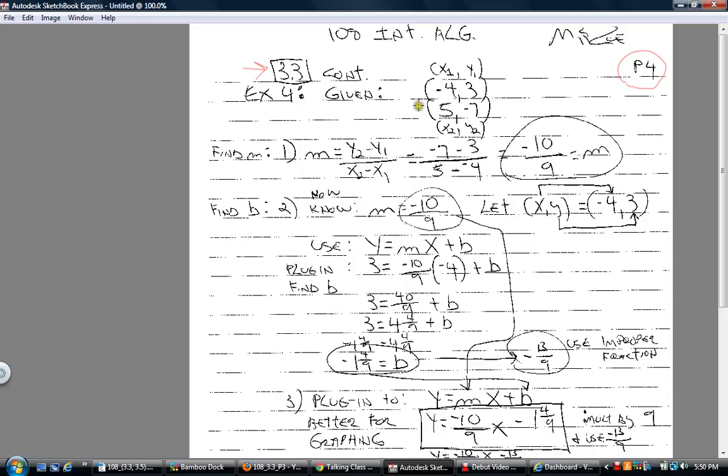Given two ordered pairs of points, what can we find first? Answer: slope. Okay, so let's find that. Now it's y2 minus y sub 1.